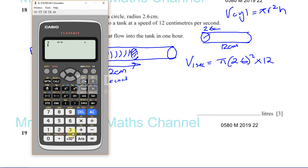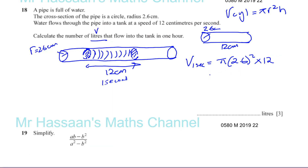So you have pi times 2.6 squared times 12. That will tell you the volume flowing through the pipe every second. That gives you 2028 pi over 25 — so 2028π/25. I've left it in this exact form to keep accuracy in my answer to the end. That's the volume in one second.